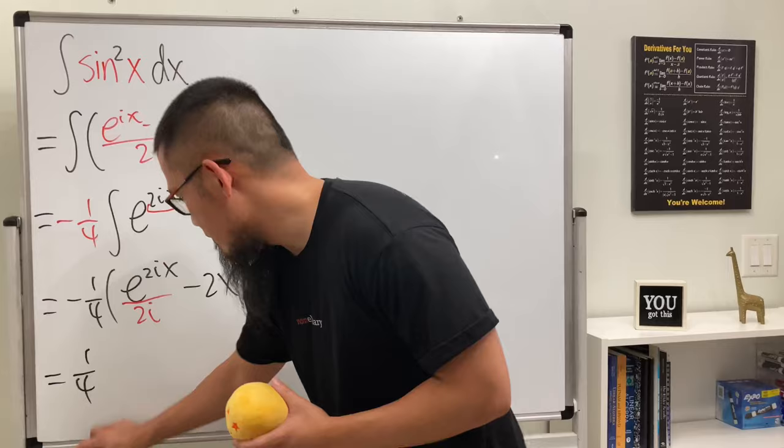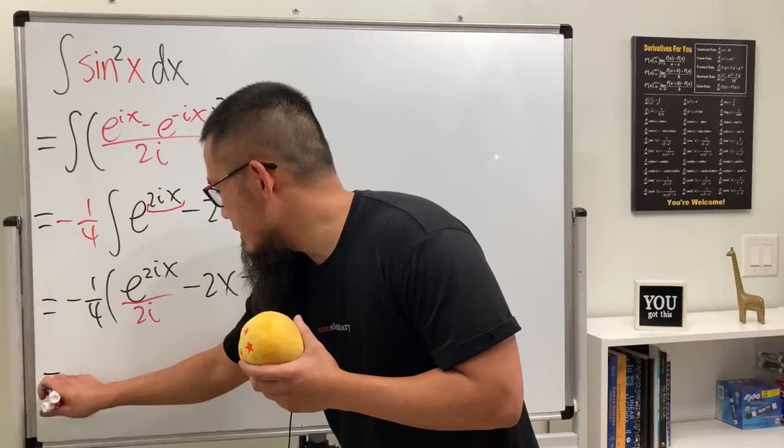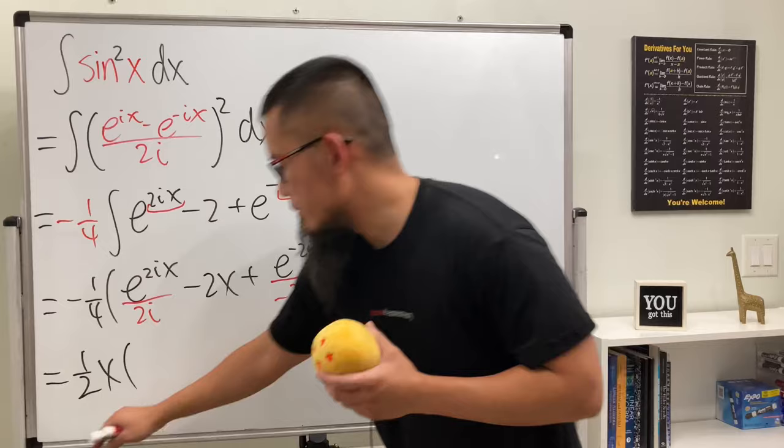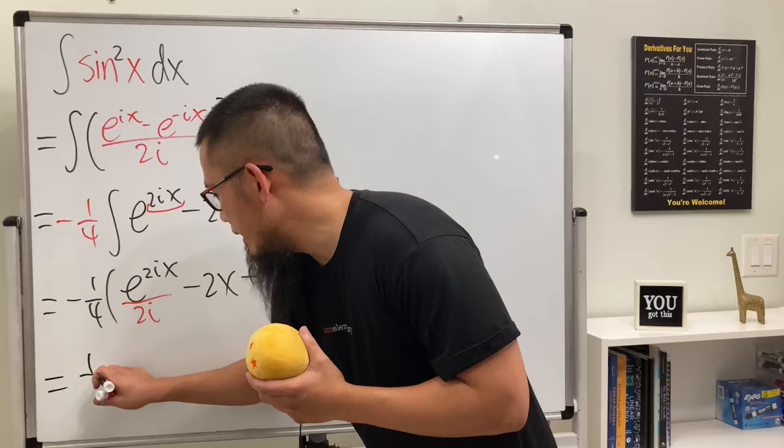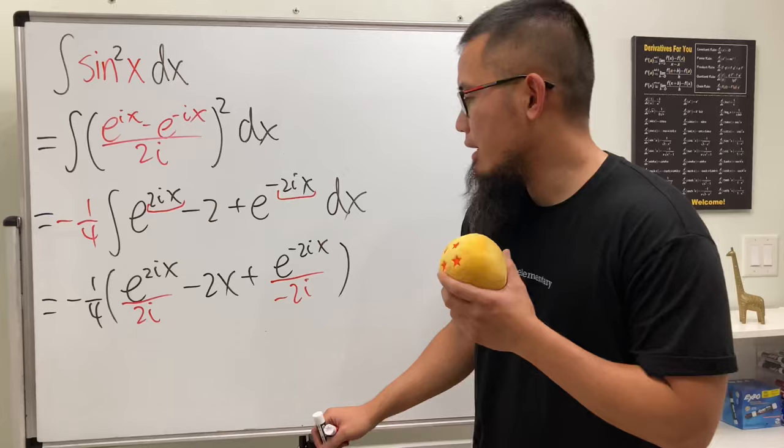This time the result is going to be positive 1 over 2x, and then the rest... this time it's going to be positive 1 over 2x.